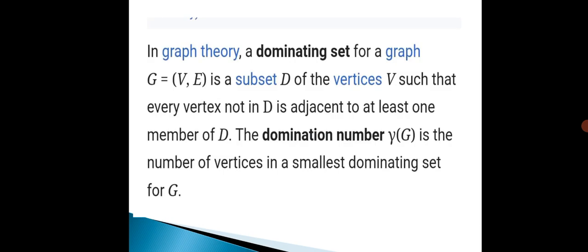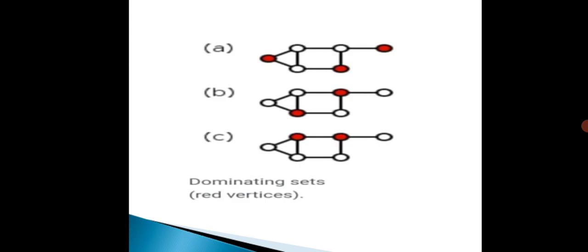But in our condition, we take the number of vertices in a smallest dominating set, so we consider graphs B and C.